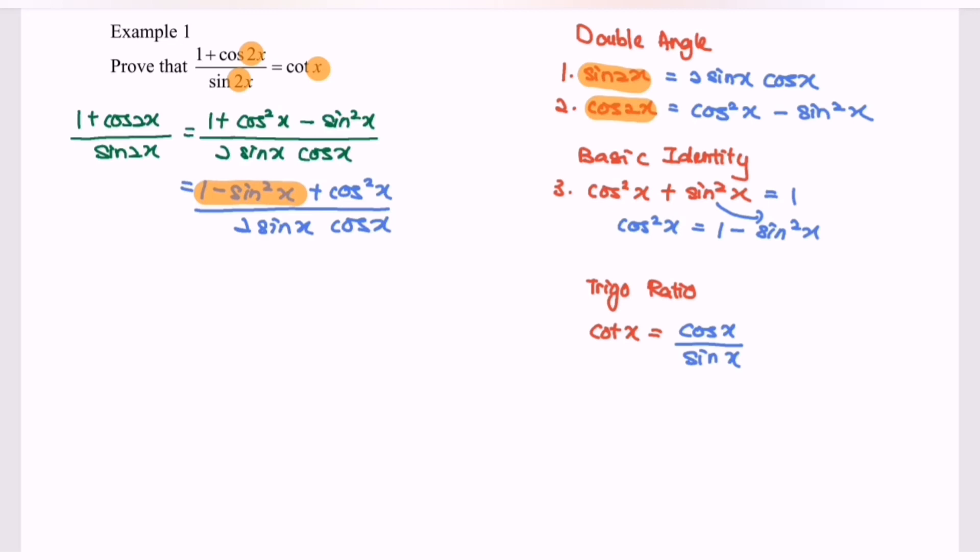So next, 2 cos squared x over 2 sin x cos x.